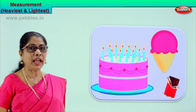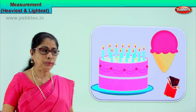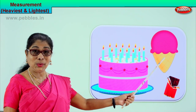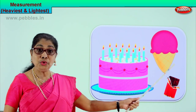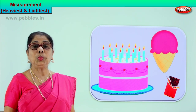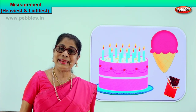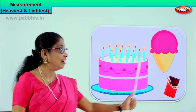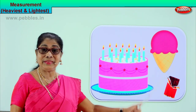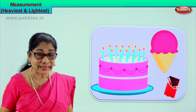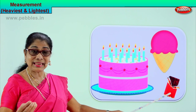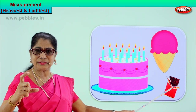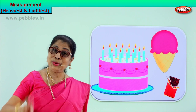Heaviest, lightest. When you say heaviest, we have to put it on a machine. Supposing we put it on a weighing machine, the cake will weigh much more than the cone ice cream or the chocolate. Now you look and tell me which may be the heaviest item. The birthday cake will be the heaviest of the three items. And which will be the lightest? A small bar of chocolate will be the lightest.